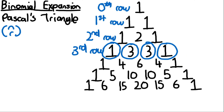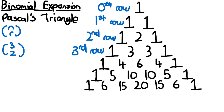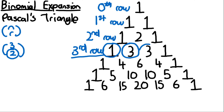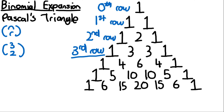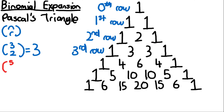For example, to find the value of (3,2): the top number three means it's the third row, and the bottom number two means it's two across. Zero across is the first position, one across is the second, and two across is the third. So (3,2) equals three — the value two across on the third row.